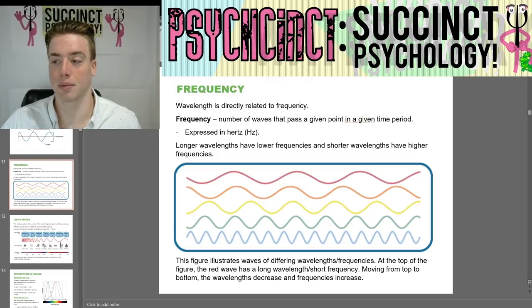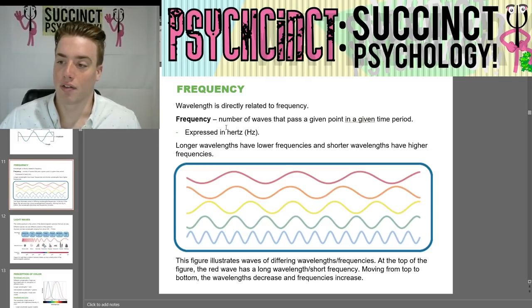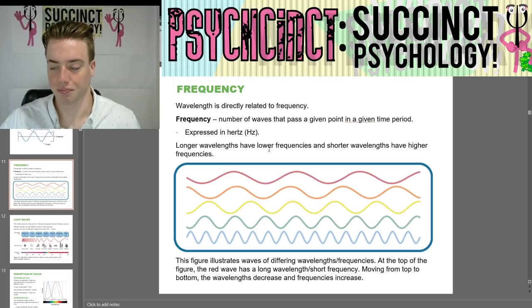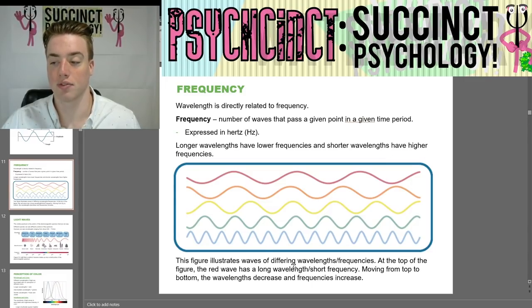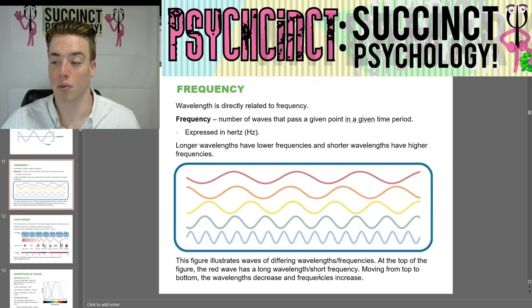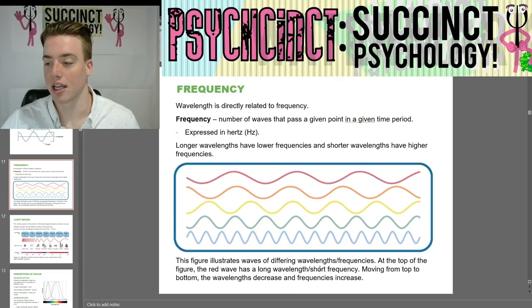Wavelength is directly related to frequency. Frequency is the number of waves that pass a given point in a given time period and is expressed in Hertz or Hz. Longer wavelengths have lower frequencies and shorter wavelengths have higher frequencies. This figure illustrates waves of differing wavelengths and frequencies — at the top, the red wave has a long wavelength and low frequency; moving down, wavelengths decrease and frequencies increase.